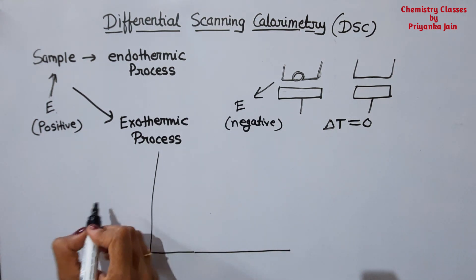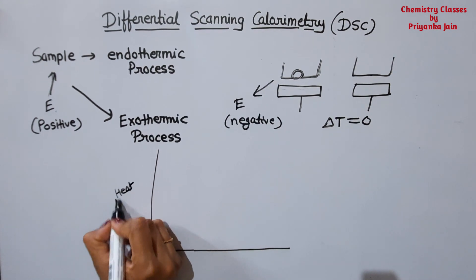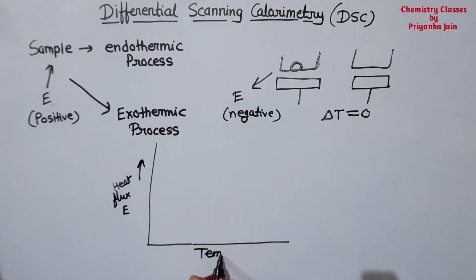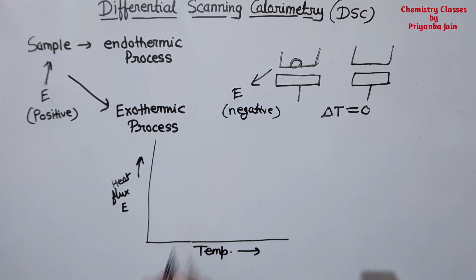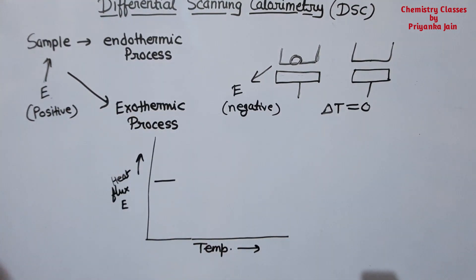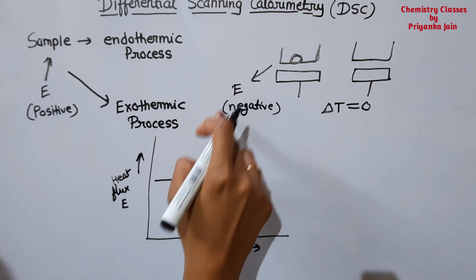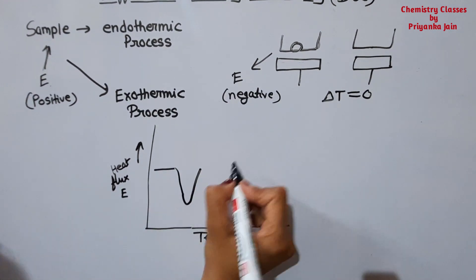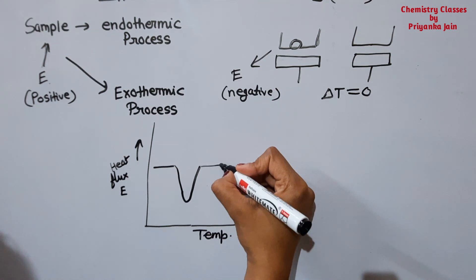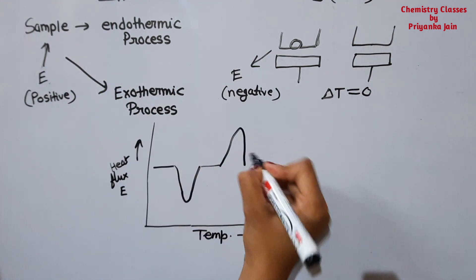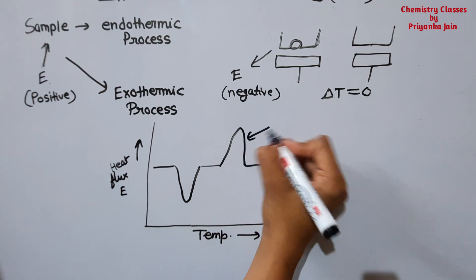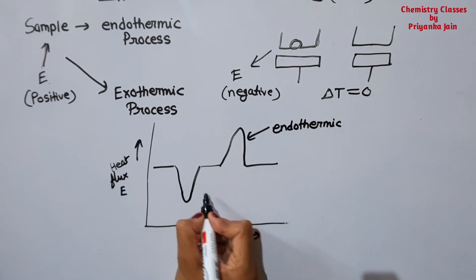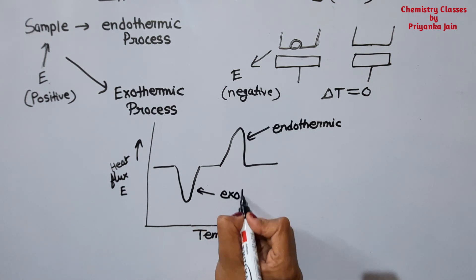In the DSC graph we plot heat flux against temperature. When an exothermic process happens, energy is removed from the system, so we get a negative peak. For the endothermic process we get a positive peak. In this way we get the peaks in the DSC curve.